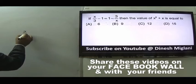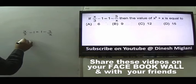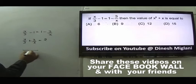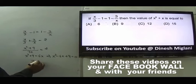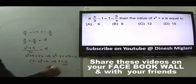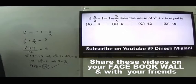Question 19: Given x/3 - 1 = 1 - 3/x. Rearranging: x/3 - 3/x = 2. Taking LCM 3x: (x² - 9)/3x = 2, so x² + 9 = 6x, giving x² - 6x + 9 = 0, so (x - 3)² = 0, x = 3. Value of x² + x = 9 + 3 = 12. Answer is C.